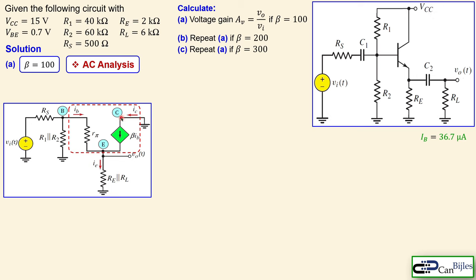The VCC node becomes AC ground. At the base node, R1 connects to VCC which is AC ground, and R2 connects to physical ground — so R1 and R2 are effectively in parallel. With C1 shorted, we have RS and VI connected. Since C2 is also shorted, RE and RL are in parallel, giving us the connection for the output node. That's the complete AC circuit.